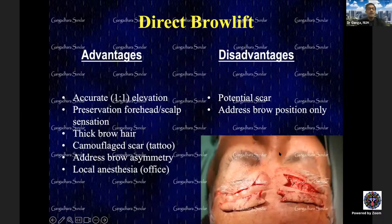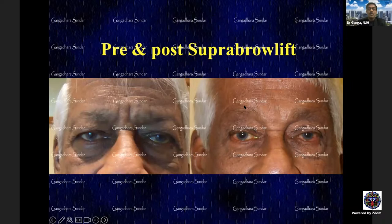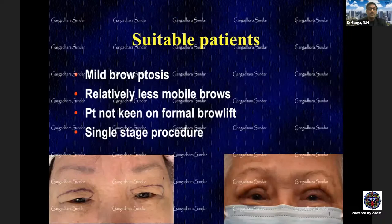The supraorbital notch and nerve are marked prior to direct brow lift. Advantages include precise one-to-one elevation, good camouflage with thick brow hair, tattoo option for ladies, and the ability to perform under local anesthesia in office. Patient selection is key. An example: a patient referred for ptosis and blepharoplasty who received only a direct brow lift, with effacement of the vertical palpebral fissure. The patient was happy without needing upper lid skin excision. Internal brow pexy — not elevation — can also be used via a blepharoplasty incision to stabilize the brow.